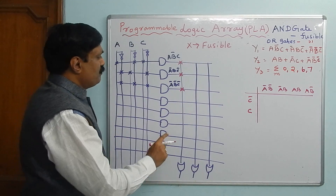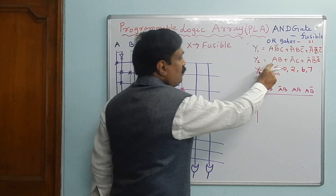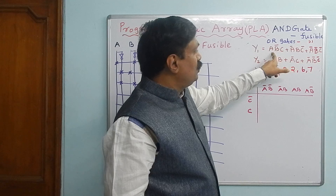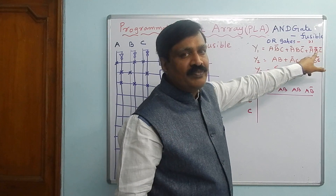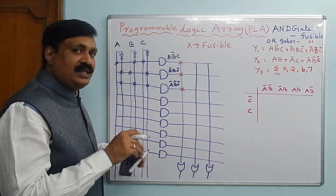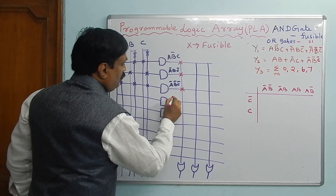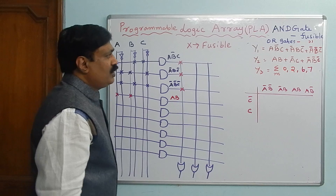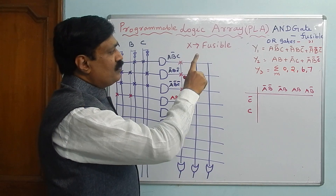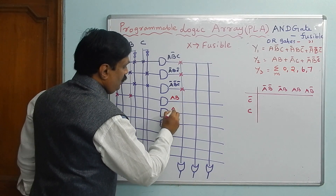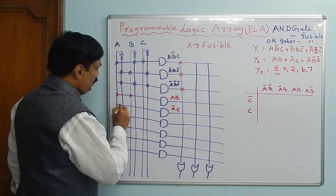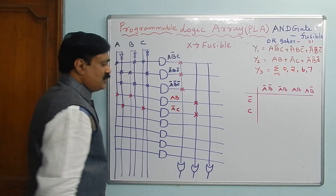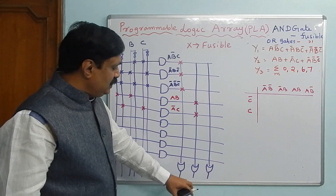For the second equation, the first term is A·B. We have to check whether this term is already used — A·B is not repeated in the first equation, so you have to use another AND-gate and connect A and B. The second term is Ā·C̄, which is also not in the first equation, so you write Ā and C̄ and connect them. Since these belong to the second equation, you connect them to the second OR-gate.